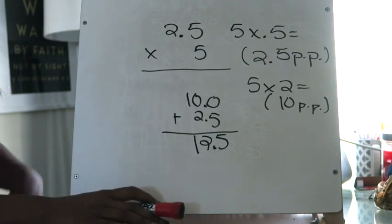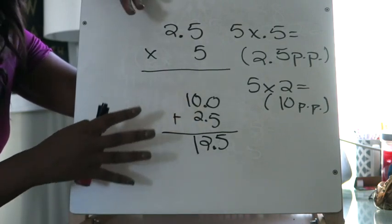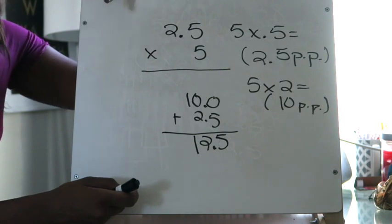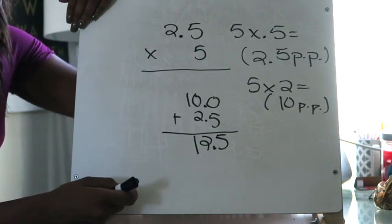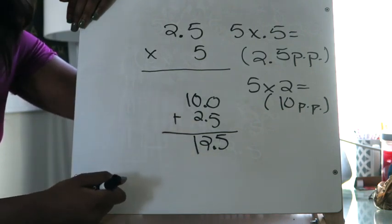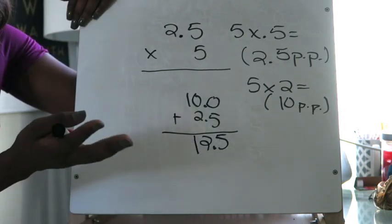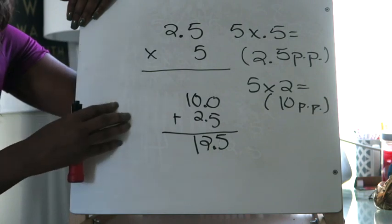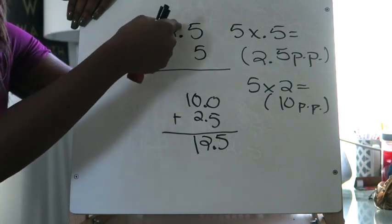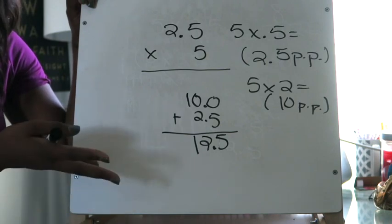Tonight on your homework, you have a little freedom: you're going to be multiplying a decimal by a whole number and you are allowed to choose whichever of these two strategies is most comfortable for you — whichever one you like best and have the most success with. The homework won't specify distributive property or partial products; that's up to you. Just make sure you have work to show and it's clear which strategy you're using. Also remember: never just bring down your decimal point.